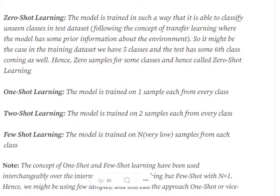One-shot learning is where the model is trained with one sample each from every class — so if you have 10 classes, you have just 10 samples in the training dataset. Similarly, two-shot learning uses two samples per class. Few-shot learning means we have n samples per class for classification, but this n is very small. The whole idea of n-shot learning is that we have very scanty data and still wish to train our model.